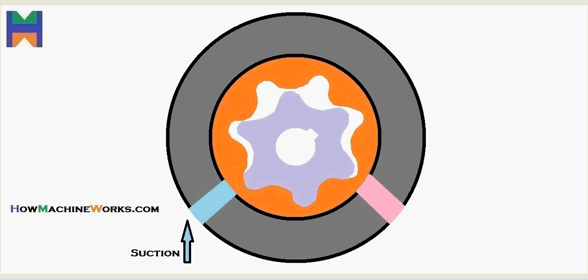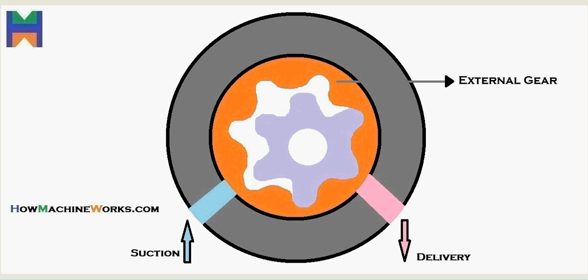That's the suction port over there, marked in light blue color. Then we have the delivery in pink. The orange is the external gear, which is a stationary gear. Then in ash, in the center, we have the internal gear or the driving gear, which actually rotates.